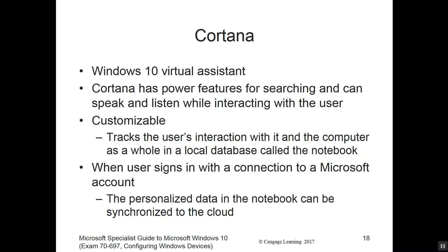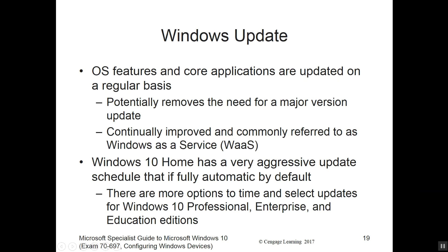Cortana is a virtual assistant that allows us to interact with the operating system — it's kind of like Siri, Microsoft's version of it. Windows Update is notable in Windows 10 for its very frequent update cycle. Rather than getting huge batch updates that take hours, we get smaller package updates that keep the operating system more stable, safe, and protected. Frequent updates are not going away.